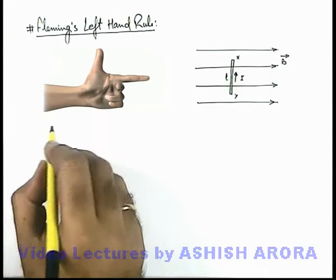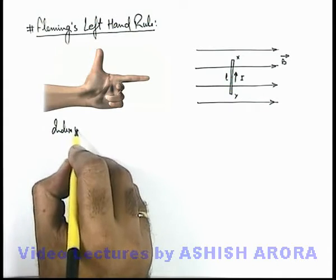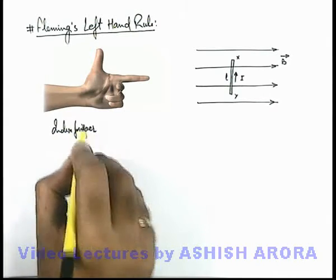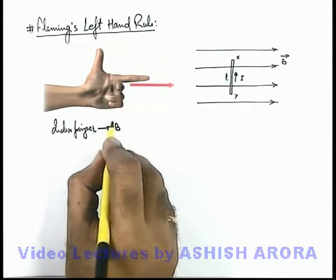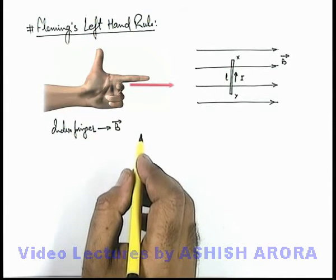And in this situation, if we point our index finger along the direction of B vector, here you can see we are pointing, and in this situation,